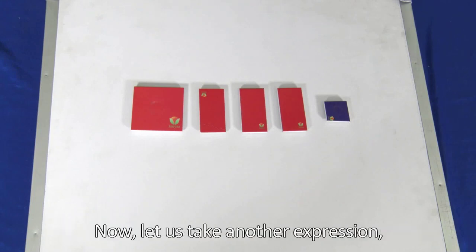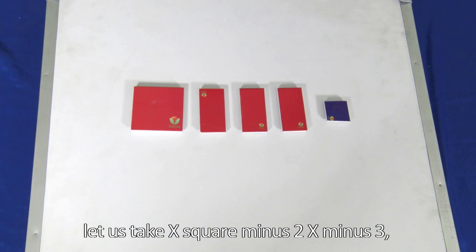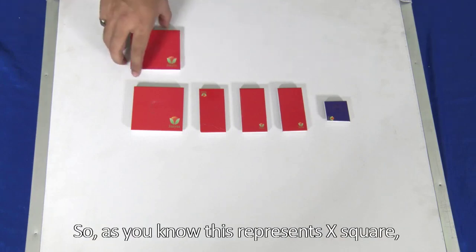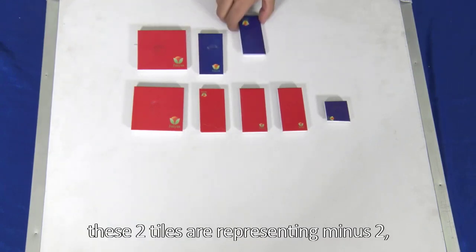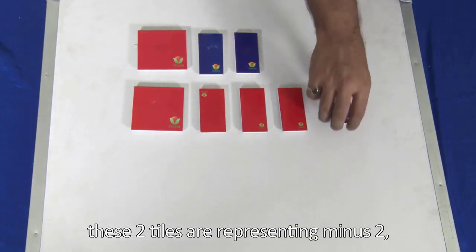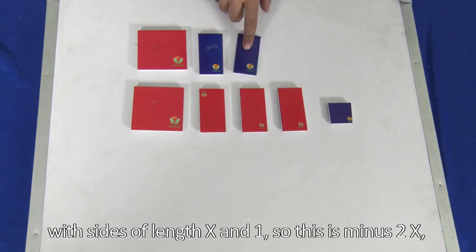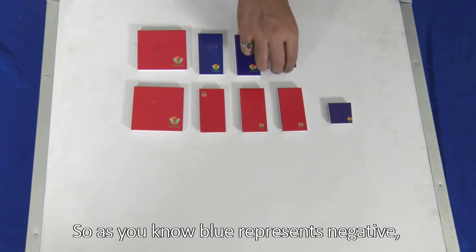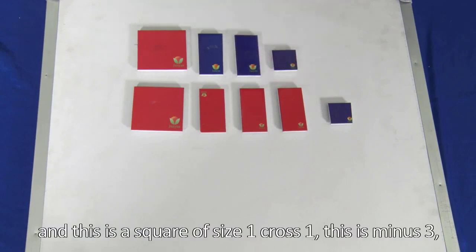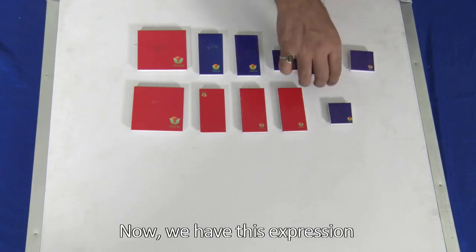Now let us take another expression: x square minus 2x minus 3. So as you know, this represents x square. Now since I am talking about minus 2x, I will take the blue tiles here. These two tiles are representing minus 2, with sides of length x and 1. So this is minus 2x. X square minus 2x and minus 3. Blue represents negative and this is a square of size 1 by 1, so this is minus 3.